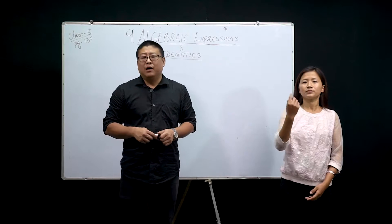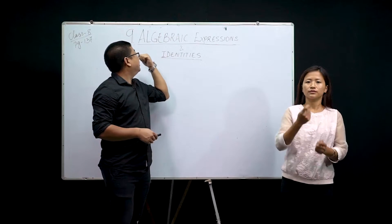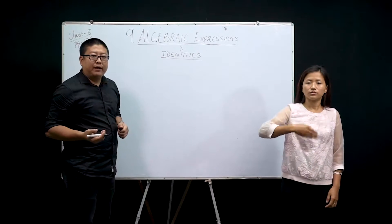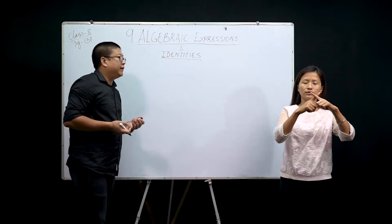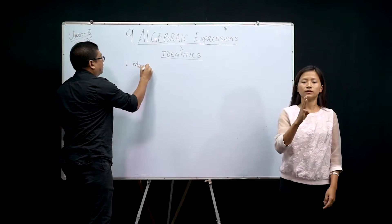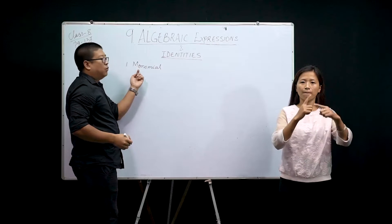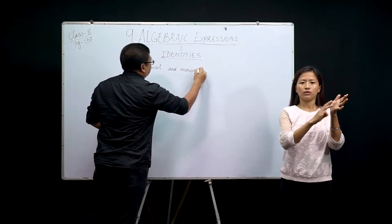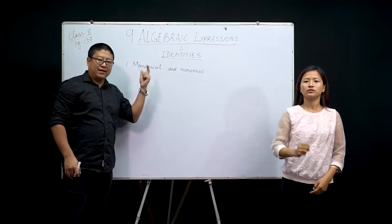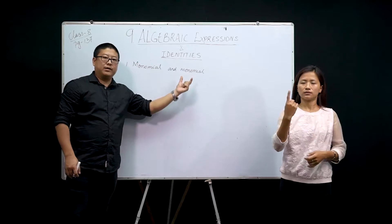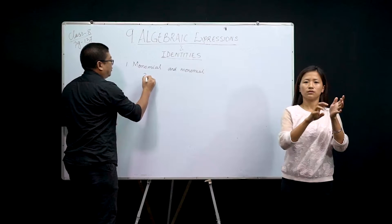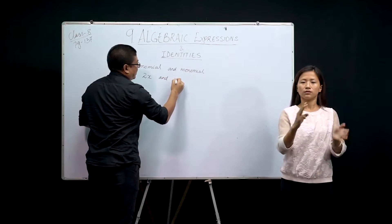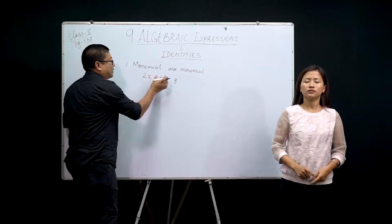Hello everyone, welcome back. We will continue with the chapter algebraic expressions and identities. Today we'll be dealing with a different topic — it will be about multiplication. The first one will be multiplication of monomial and monomial. Monomial means single term, so this is one term into one term. An example of a monomial will be 2x, and another monomial we can take is y.